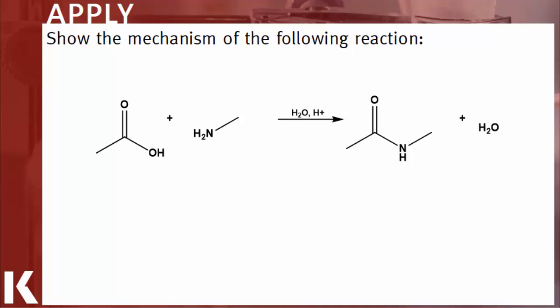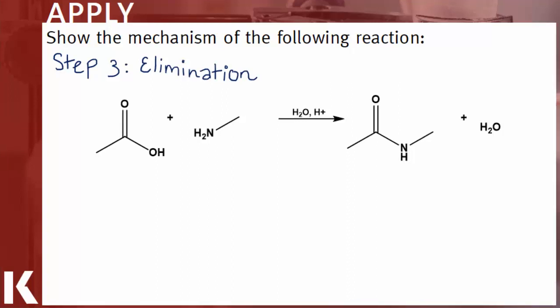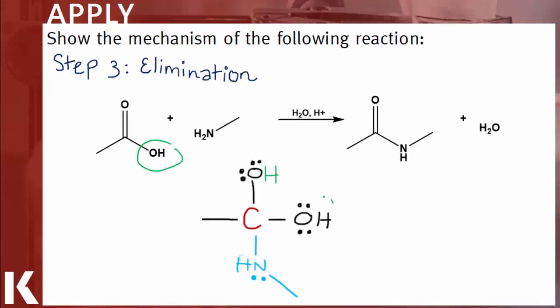So step one's protonation, step two's addition, and step three is elimination. Like in every other nucleophilic acyl substitution, in your elimination step, that is when you're going to get rid of your leaving group. Here, our leaving group is this hydroxyl. So here's your tetrahedral intermediate and here is our hydroxyl leaving group, which I'm about to get rid of.